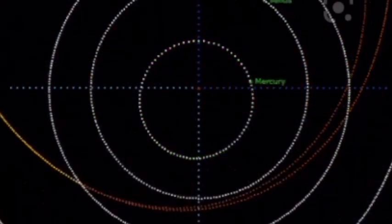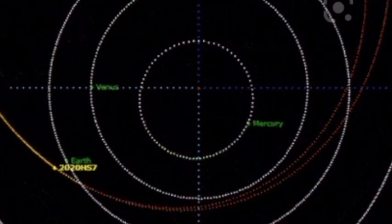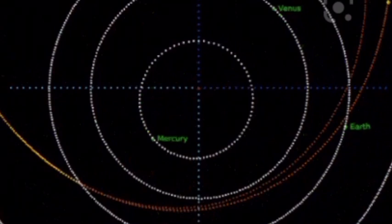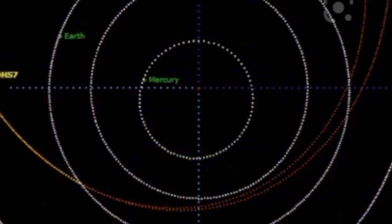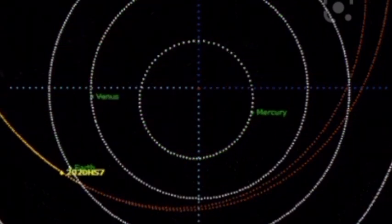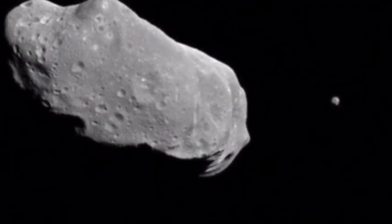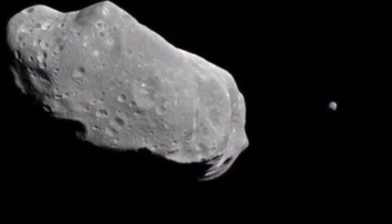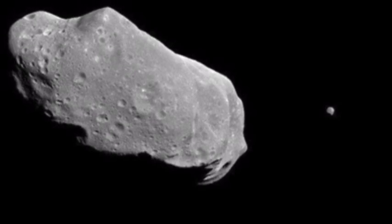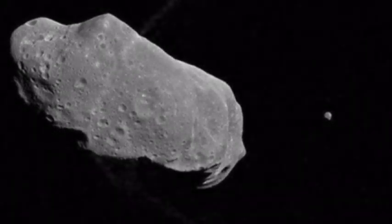Asteroid 2020-JJ is estimated to be between 9 and 20 feet (2.7 to 6 meters) across, making it a pretty puny little hunk of space junk. Consider that asteroid 1998-OR2, which made headlines recently for its close pass, not nearly as close as 2020-JJ, is a mile across.